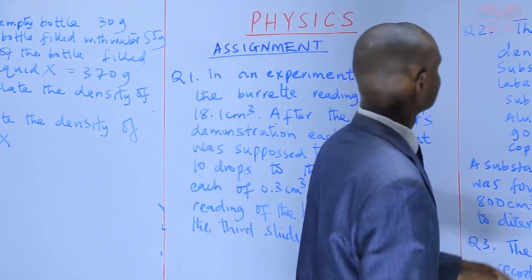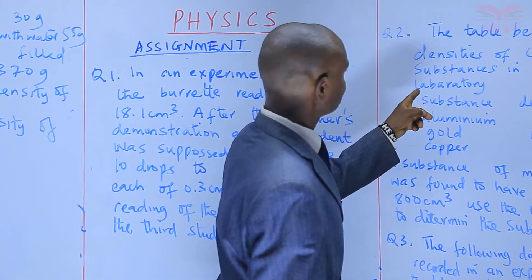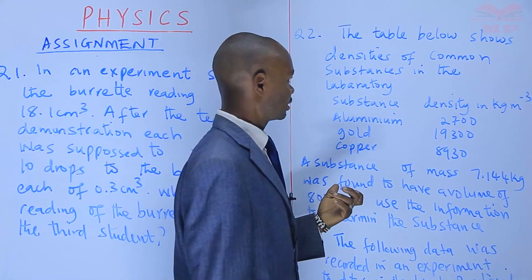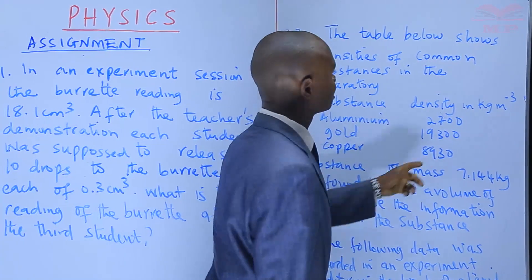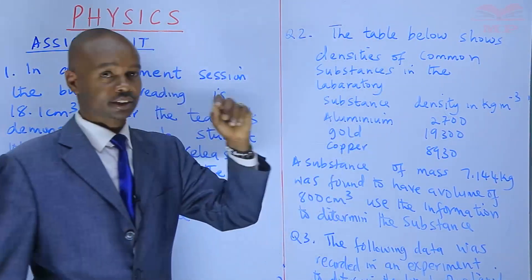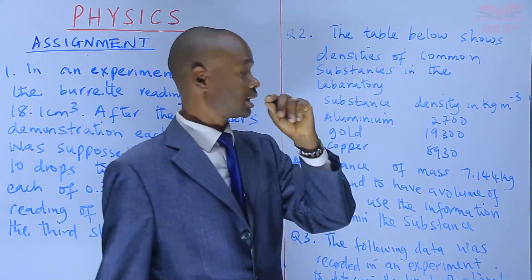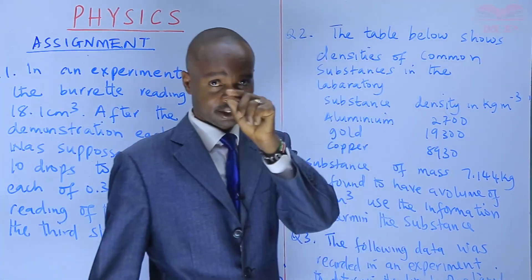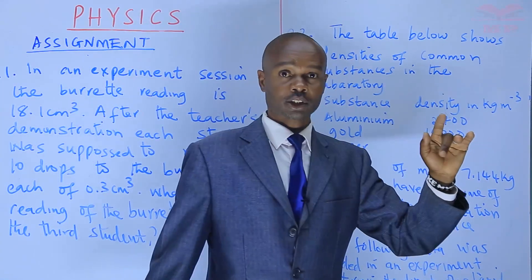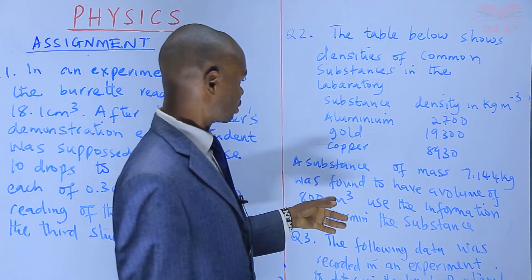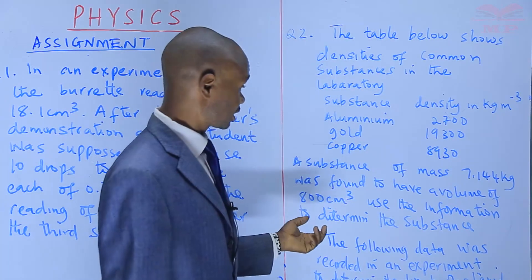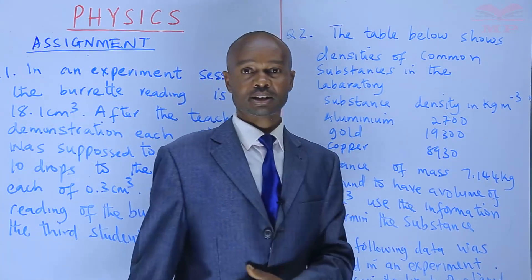Question two: The table below shows densities of common substances in the laboratory — aluminum: 2,700 kg/m³; gold: 19,300 kg/m³; copper: 8,930 kg/m³. A substance of mass 7.144 kilograms was found to have a volume of 800 cubic centimeters. Use the information to determine the substance.